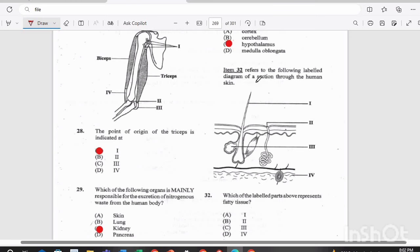Item 32 refers to the following label diagram of a section through the human skin. Which of the following parts above represents fatty tissue? The answer there would be D. We have the hair follicle here, we have the sweat pore here, we have the sweat gland here, and then we have the fatty tissue down here. The sebaceous gland here, sorry, the sweat gland is here, so the pore is here where your sweat would come out, and your fatty tissue would be below, and this would be your hair follicle.